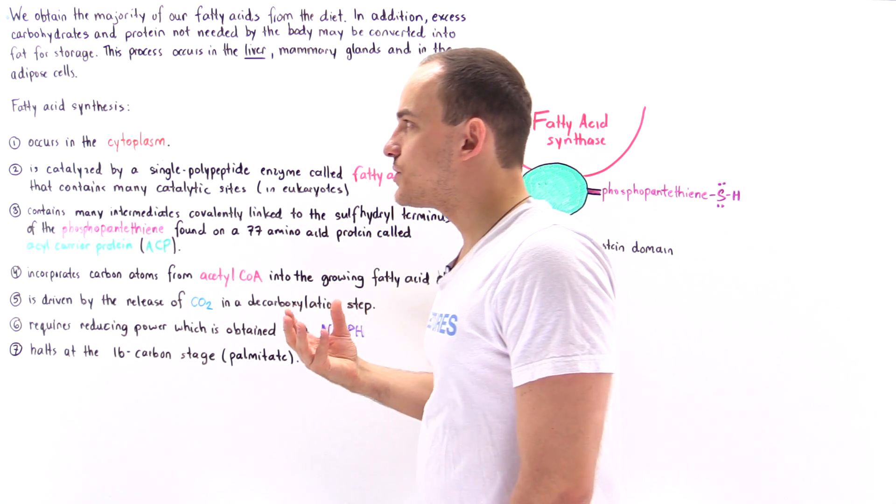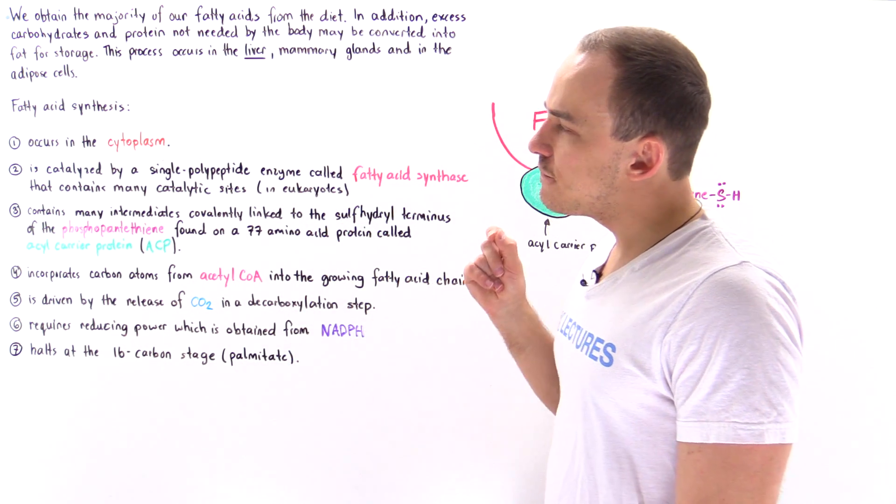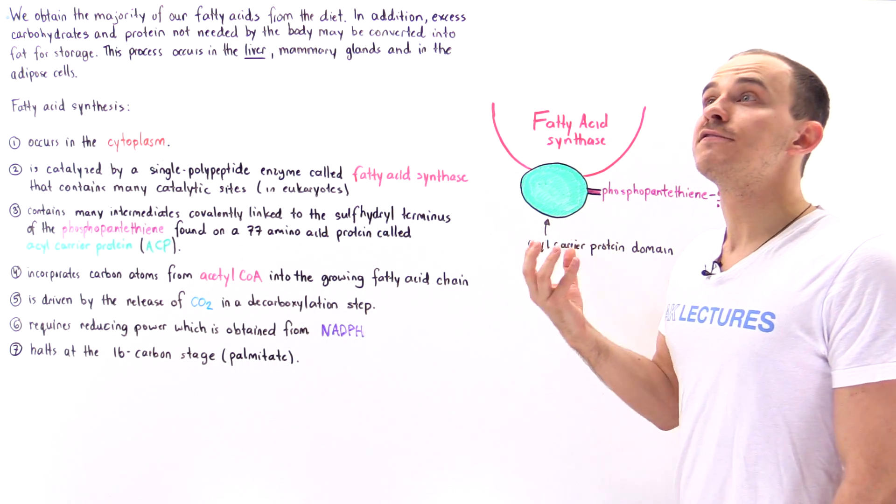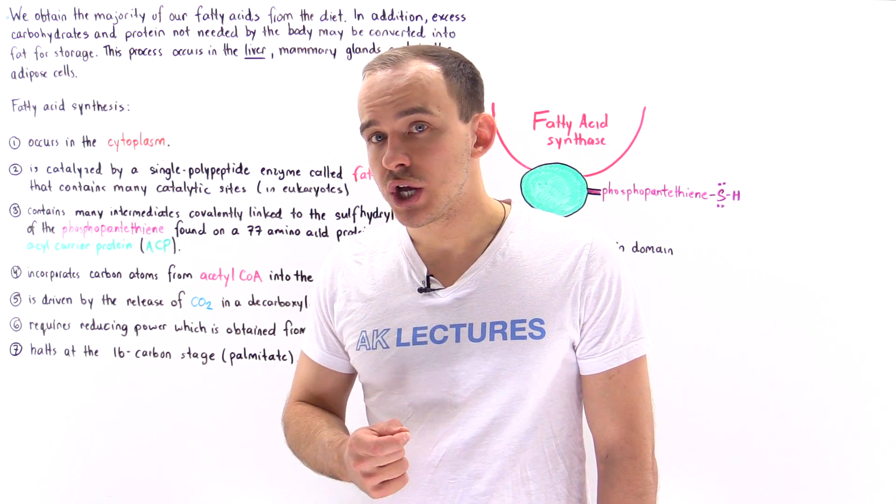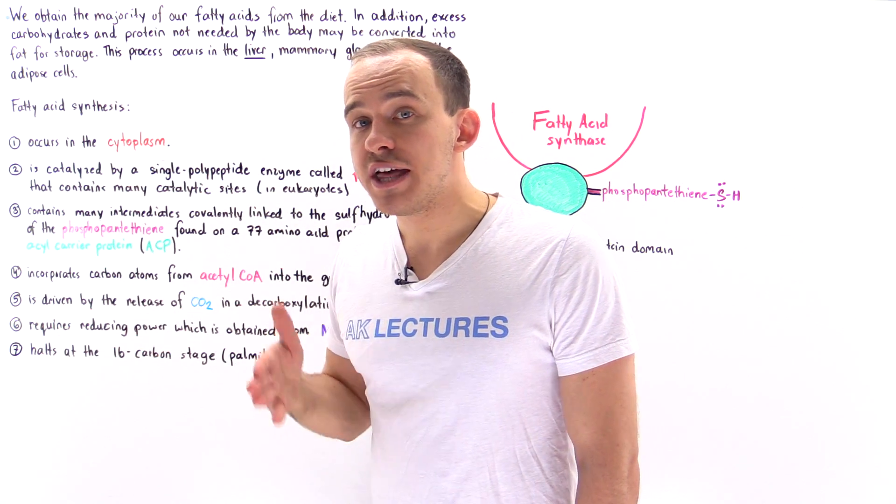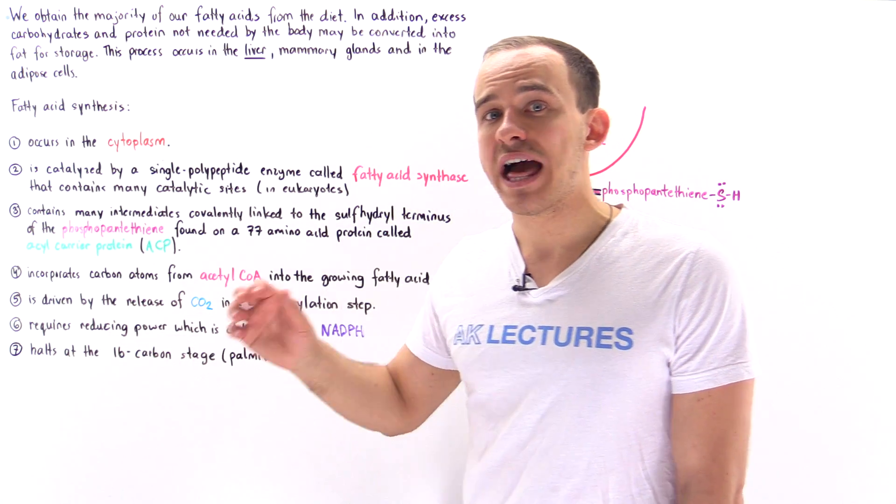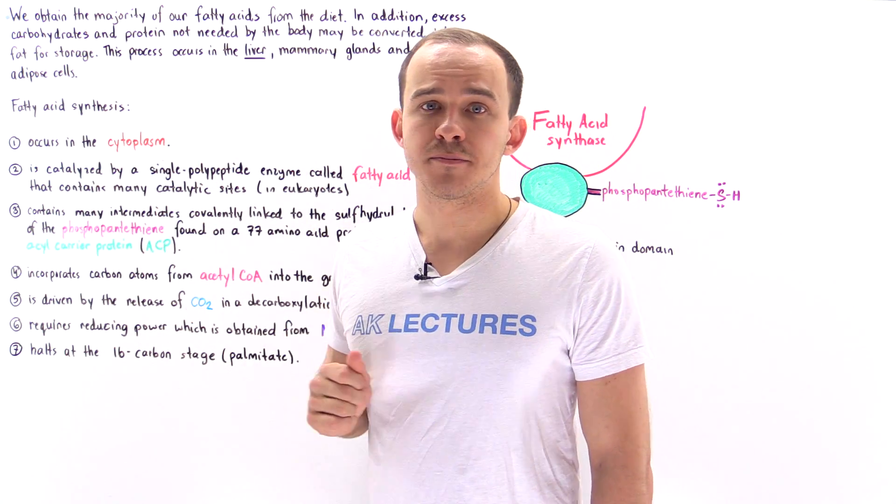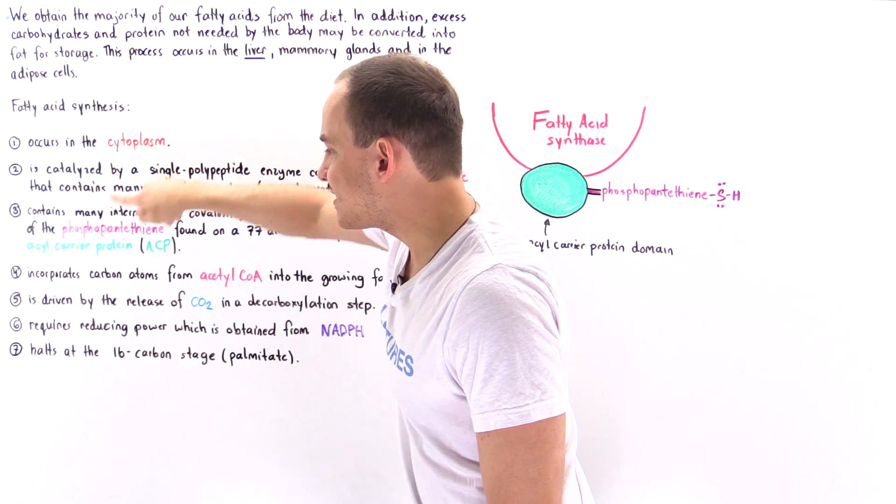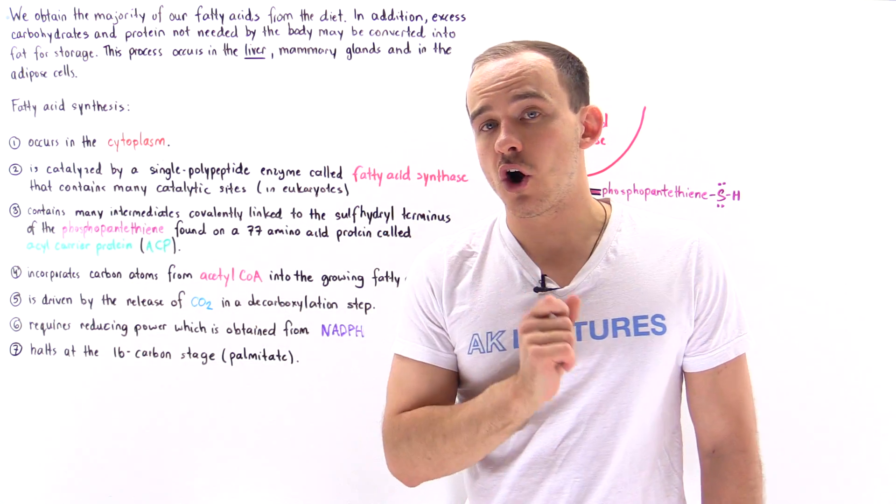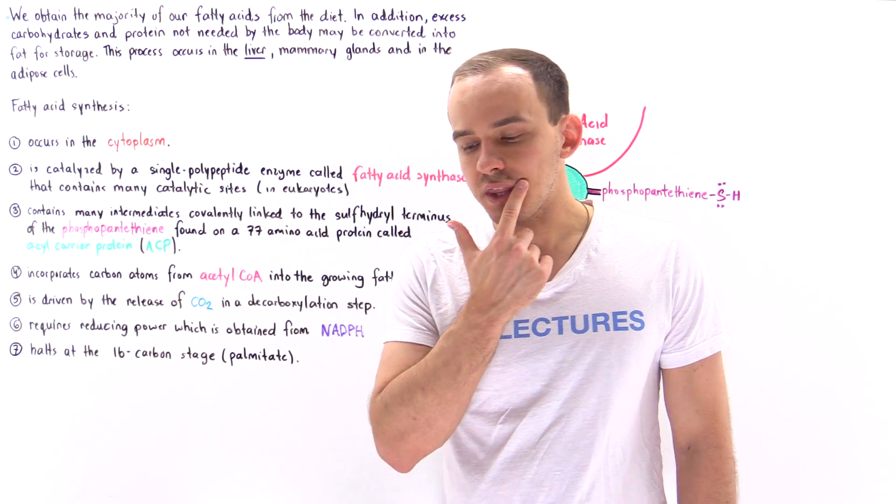Now, the process by which we actually form fatty acids isn't a very energetically favorable process. In fact, we have to use ATP molecules to carboxylate and then the process of decarboxylation releases energy and that helps drive the fatty acid synthesis process forward. So we see that fatty acid synthesis is driven by the release of carbon dioxide molecules via a decarboxylation step.